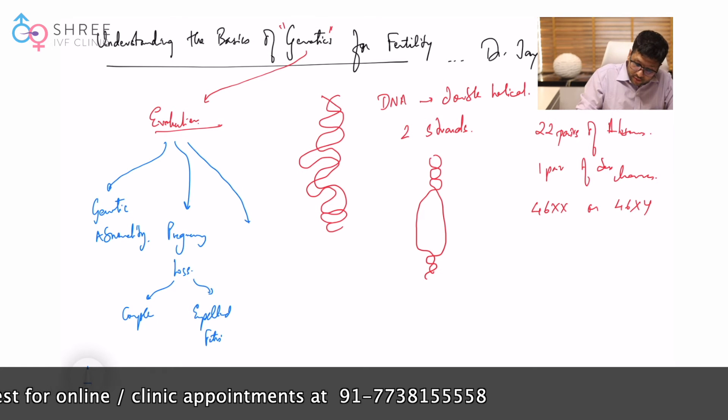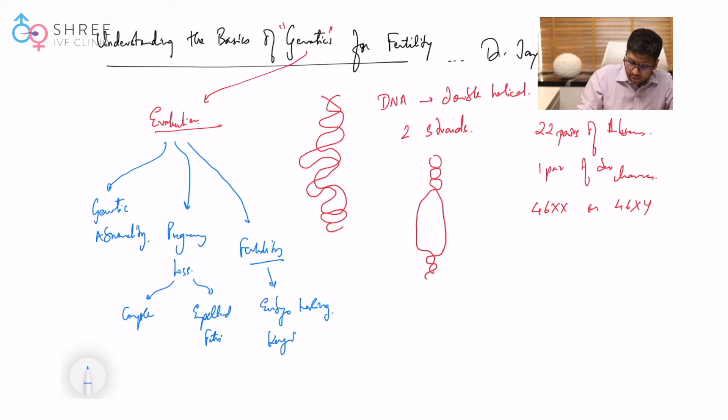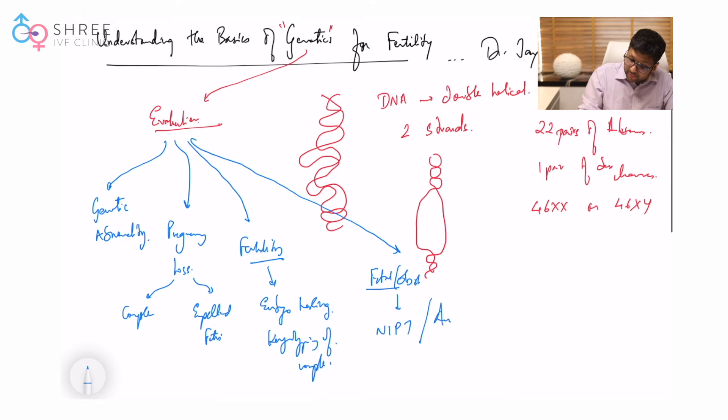Third, when I look at fertility, we are looking at genetics for embryo testing and karyotyping of the couple to establish genetic causes. We have PGT, PGM, PGS - I'll talk about all these things in a while. Finally we have fetal medicine and obstetrics where we look at NIPT (non-invasive prenatal testing), amniocentesis, and fetal biopsies. In all these we need some form of genetic evaluation.